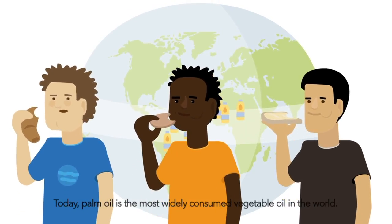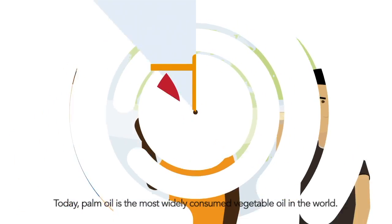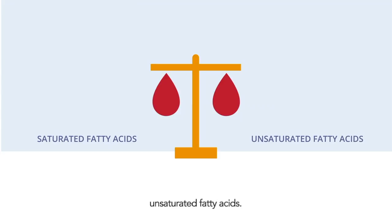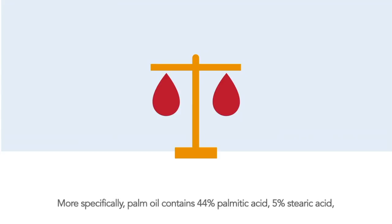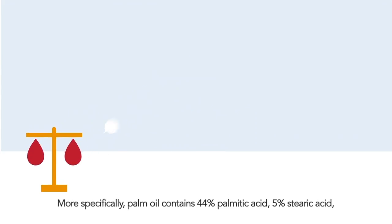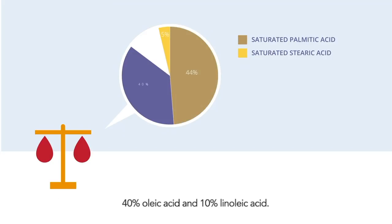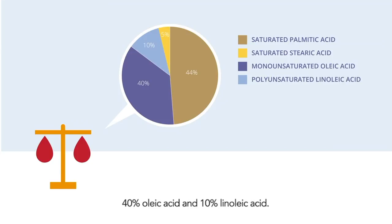Today, palm oil is the most widely consumed vegetable oil in the world. Palm oil has a unique and balanced composition of saturated and unsaturated fatty acids. More specifically, palm oil contains 44% palmitic acid, 5% stearic acid, 40% oleic acid and 10% linoleic acid.